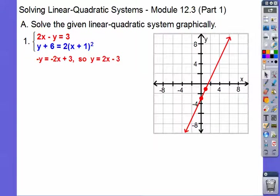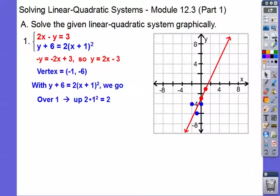We got that line right there. And then this parabola has vertex negative 1, negative 6. Negative 1, negative 6 is right there. And this is set up to graph. So I'm going to go over 1, up 2 times 1 squared. So over 1, up 2 times 1 squared, which is 2. So it's going to be a parabola, up 2 times 1 squared. So it's 2 on each side.